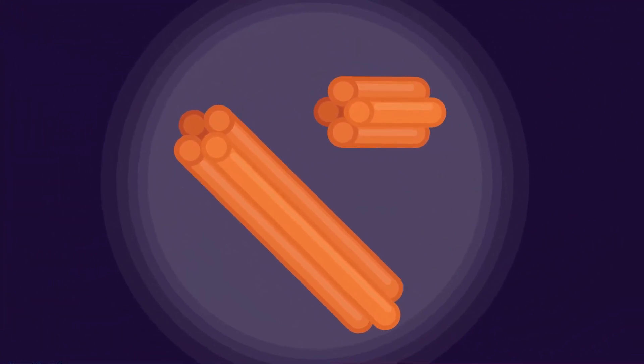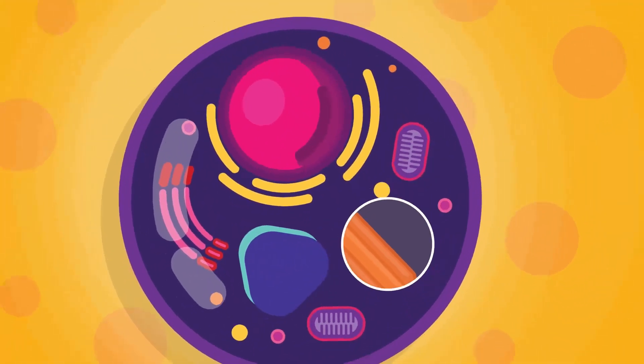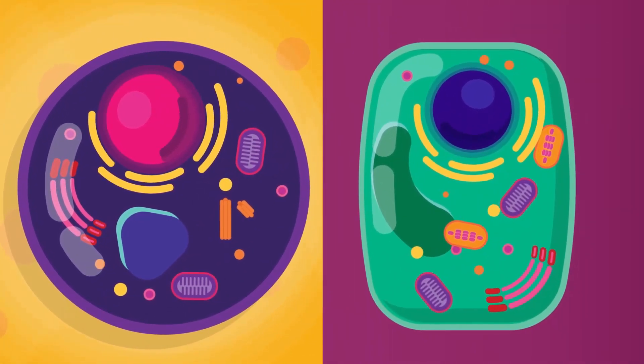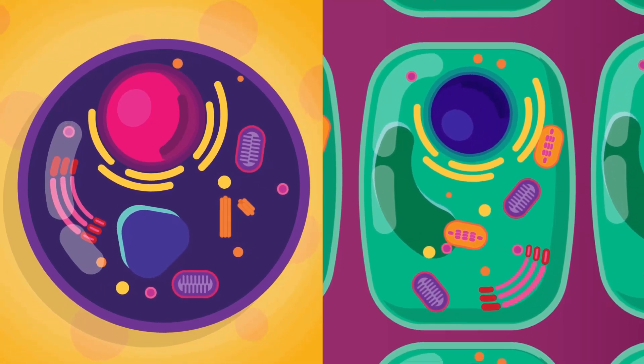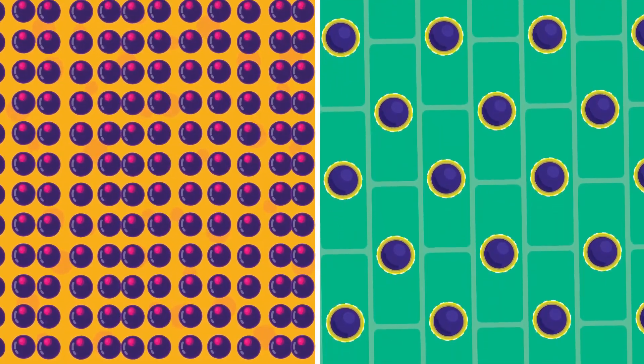A structure present in animal cells and not in plant cells is the centriole. Under the microscope, centrioles look like small structures close to the nucleus. Plant cells are usually larger than animal cells and are surrounded by a thick rigid cell wall. This is why they can be seen more easily under a light microscope than an animal cell.